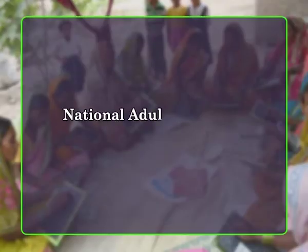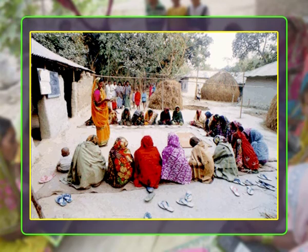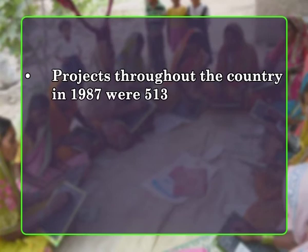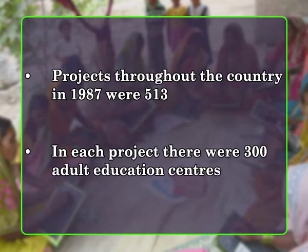The strategy adopted under the National Adult Education Program was mainly center-based, where 20 to 30 adult learners were enrolled in each center. Under NAEP, Rural Functional Literacy Projects were sanctioned by the central government. The erstwhile 144 former functional literacy projects and 60 non-formal education projects were merged into it. Further projects were added, and the number of projects throughout the country in 1987 were 513. In each project there were 300 adult education centers.